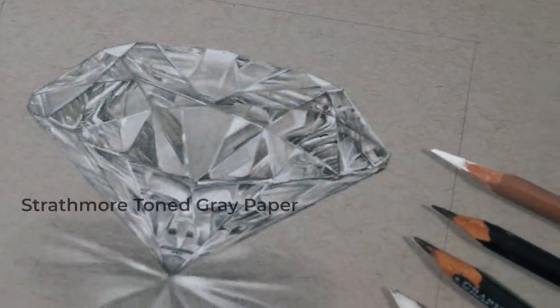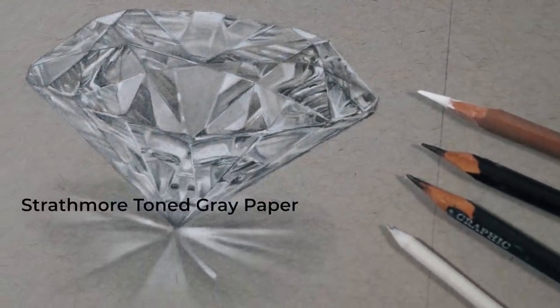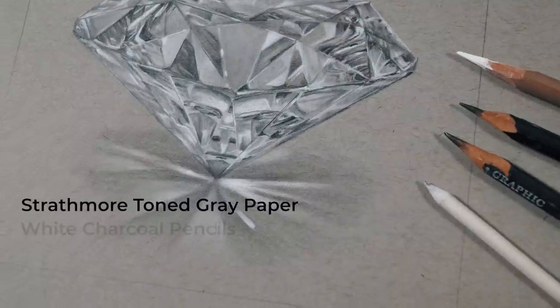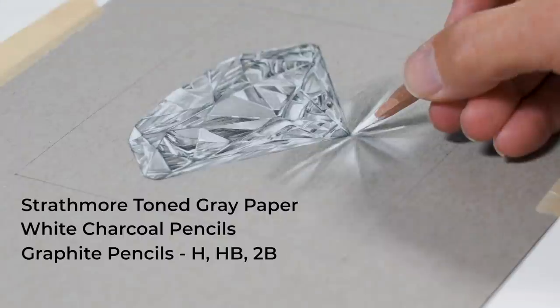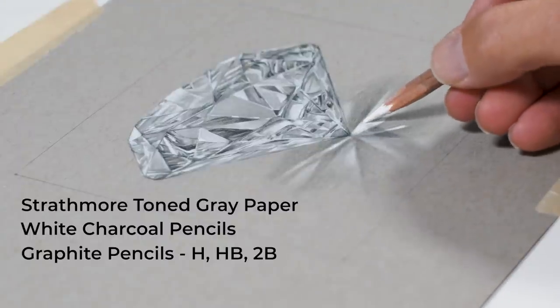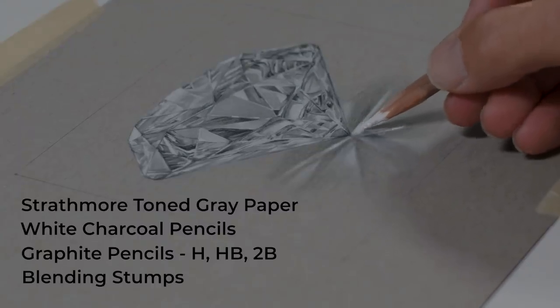For this drawing, I'll be working on Strathmore toned gray paper. I'll also be using white charcoal pencils, and these are by Generals, and I'll also be using a few graphite pencils, including an H, an HB, and a 2B pencil, and also some blending stumps.